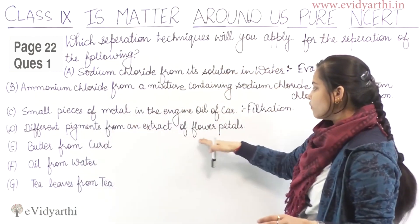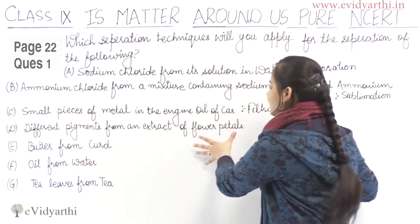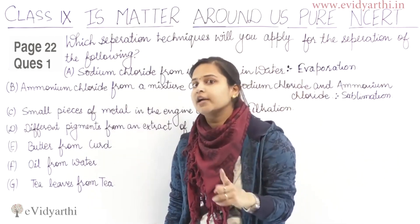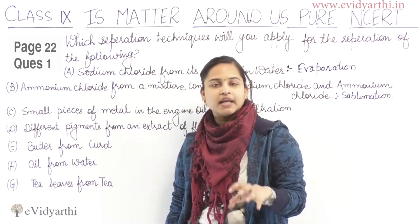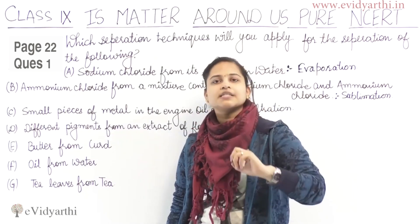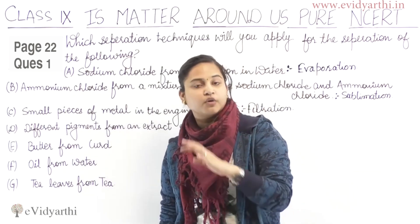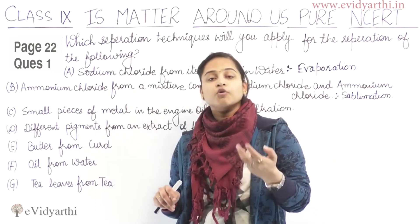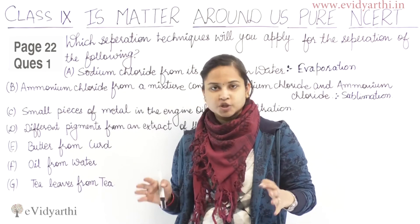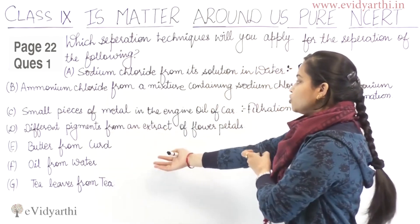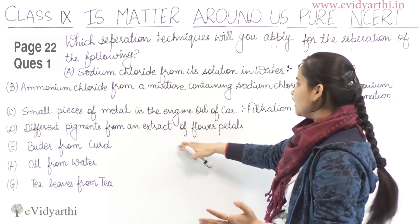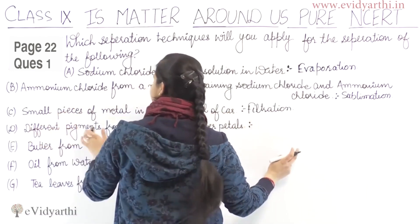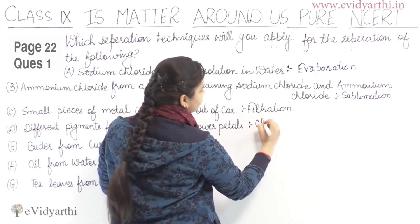Part D: Different pigments from an extract of flower petals. When we think of pigments, flower petals, and separation — chromatography comes to mind. Chromatography was first used to separate colors. This technique is used in laboratories for the separation of mixtures, and also for separation of solutes dissolved in the same solvent. So chromatography is the technique used to separate pigments from the extract of flower petals.